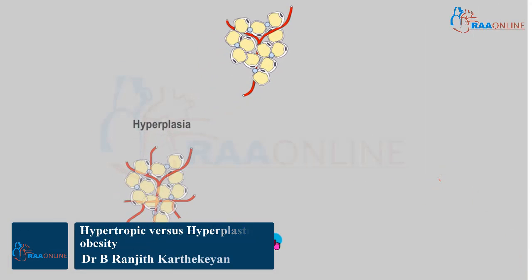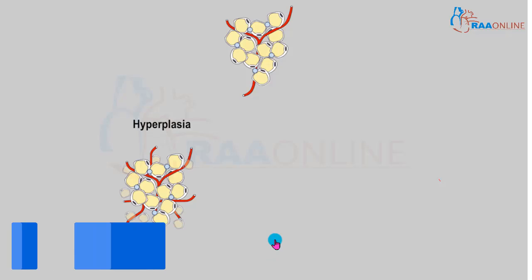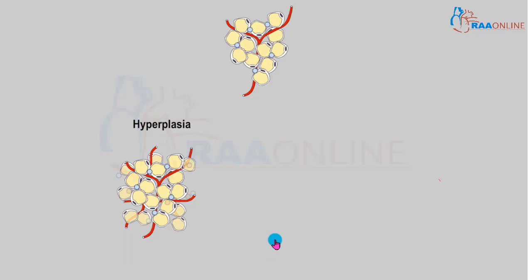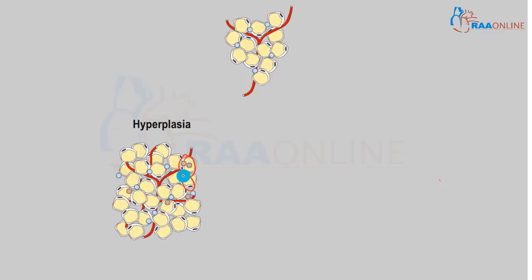As mentioned earlier in the definition, there is hypertrophic as well as hyperplastic obesity. In hyperplasia, there is an increase in the number of fat cells — the fat cell count increases, but the size is not altered.